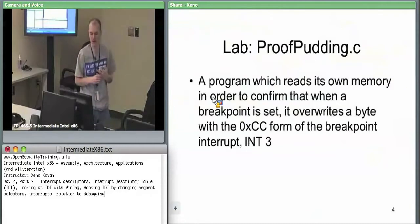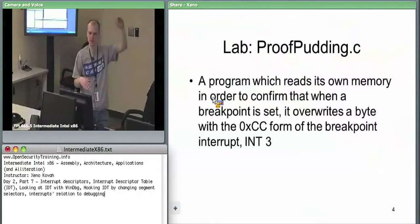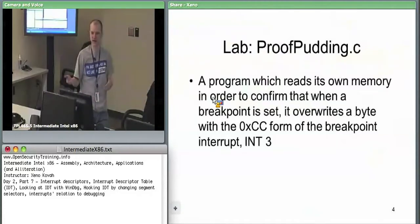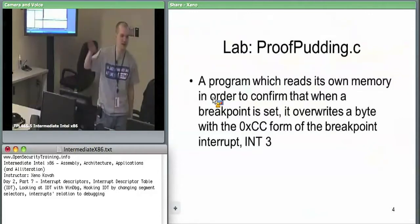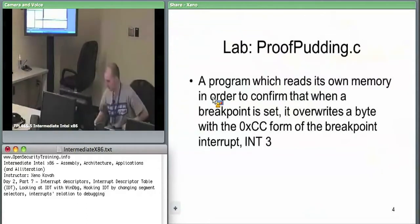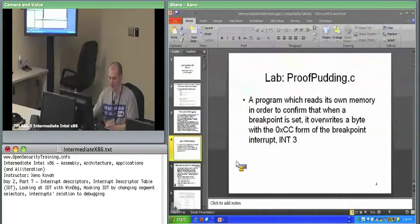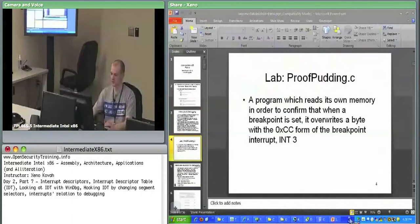This is also used as an anti-debug check. Instead of checking one byte at a time, malware will create a checksum over an entire range of memory. There is a dedicated CRC - cyclic redundancy check - instruction in the Intel instruction set. If you CRC a memory range and it doesn't match the clean code, someone has stuck a breakpoint in there. The malware can then issue different code. We're now going to use self-reading code to get around the debugger's lies - we can do this from outside or inside the VM.